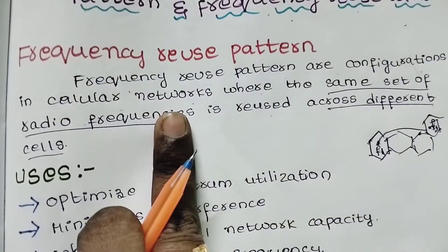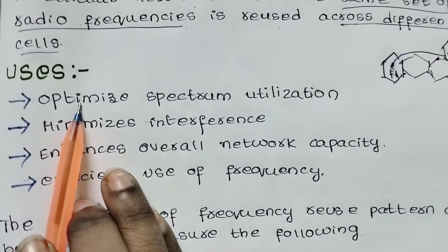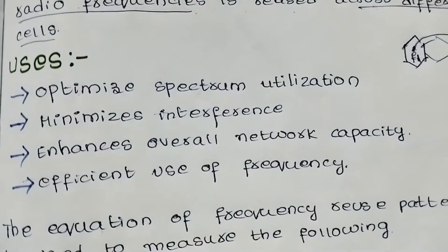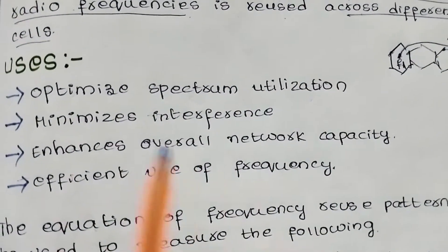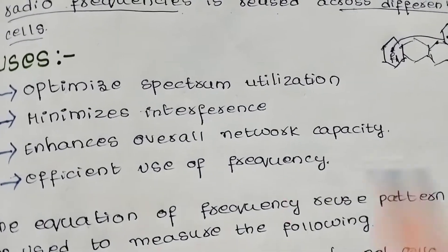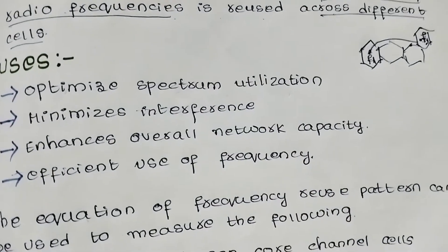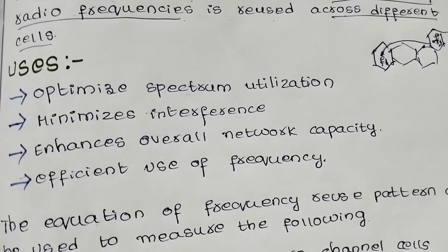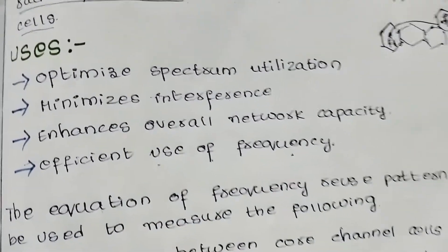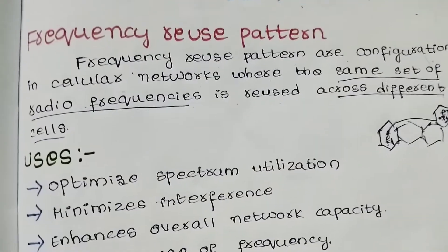We use this frequency reuse pattern for the following purposes: first, to optimize spectral utilization; next, to minimize interference — if you use digital bands you can reduce interference; and also to increase the overall network capacity and efficient use of frequency.